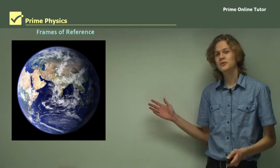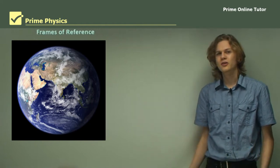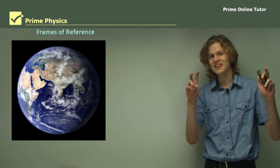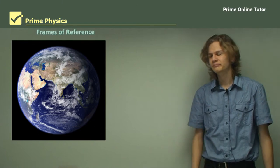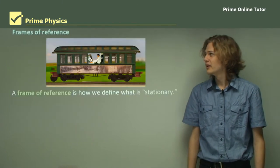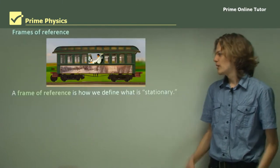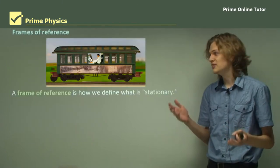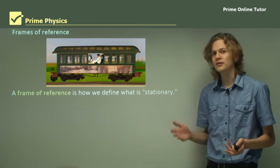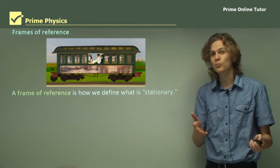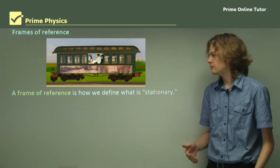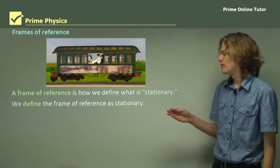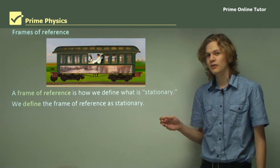Over here we have a picture of the earth, which is what we usually use as stationary. A frame of reference is how we define what is stationary — that is, what isn't moving. We define the frame of reference as stationary.